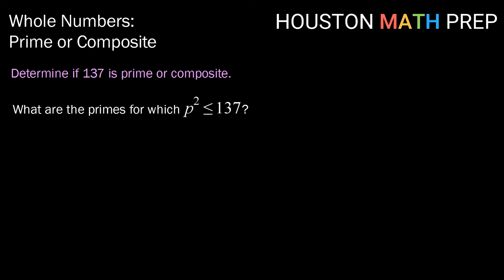It's going to be important for these methods that you know the first several prime numbers. So our smallest prime number is 2 and 2 squared is 4. 4 is certainly less than 137, so it will be a candidate. Our next prime number is 3. 3 squared is 9, which is less than 137. Our next prime number is 5. 5 squared is 25.